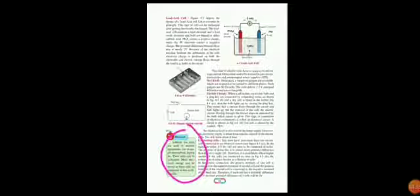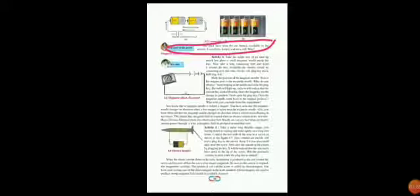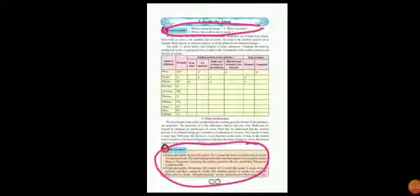On page number 23 you have that whole column, those two electrical circuit diagrams, and that whole paragraph — cancelled. On page number 25 you have 'Research' — cancelled. On page 26 'Use Your Brain Power'. On page 28 'Can You Tell' and 'Do You Know' — both cancelled. On page 29 'Try This'. On page 31 'Do You Know'. On page 33 'Can You Tell'. On page 36 'Collect Information' is cancelled.